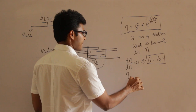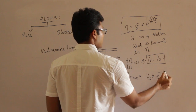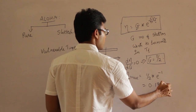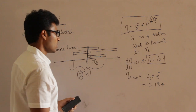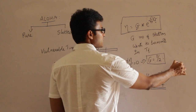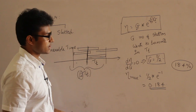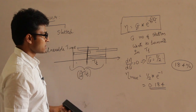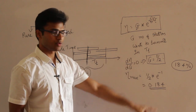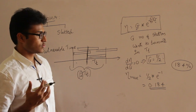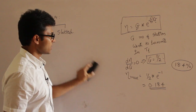Substituting G = 1/2 into the formula: maximum efficiency = (1/2) × e^(−1) = 0.184, which is 18.4%. This is very low efficiency due to the large number of collisions. A typical exam question will give you the bandwidth — say 100 Mbps — and ask for effective bandwidth. You simply multiply the bandwidth by the efficiency: 100 Mbps × 0.368... but for Pure Aloha use 0.184.